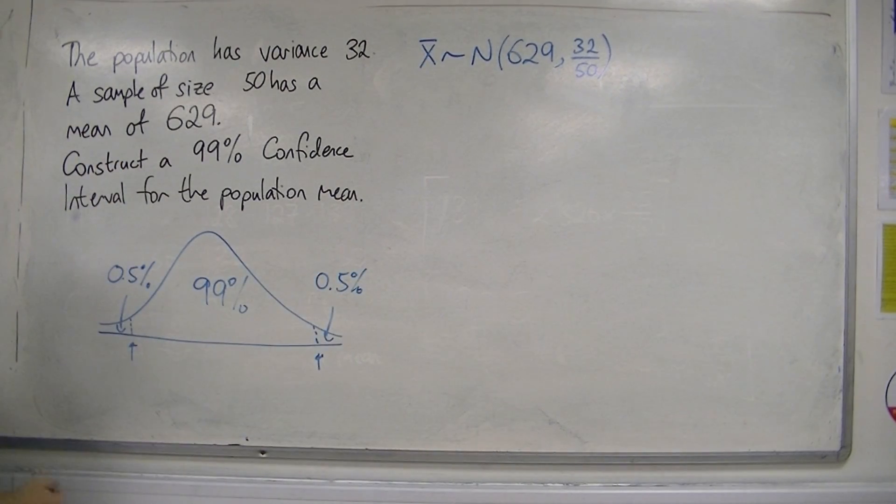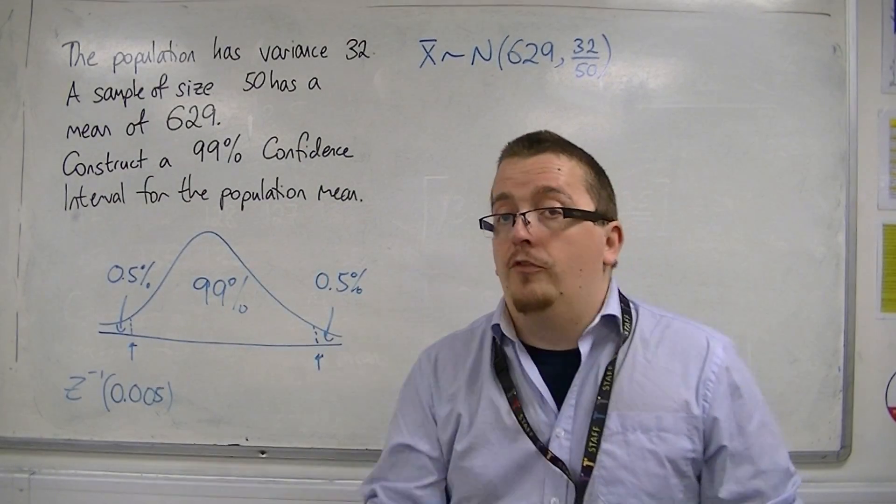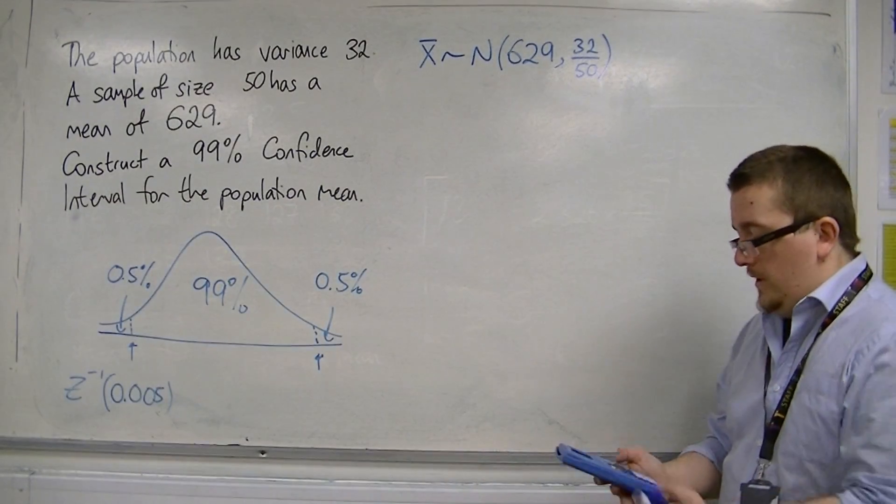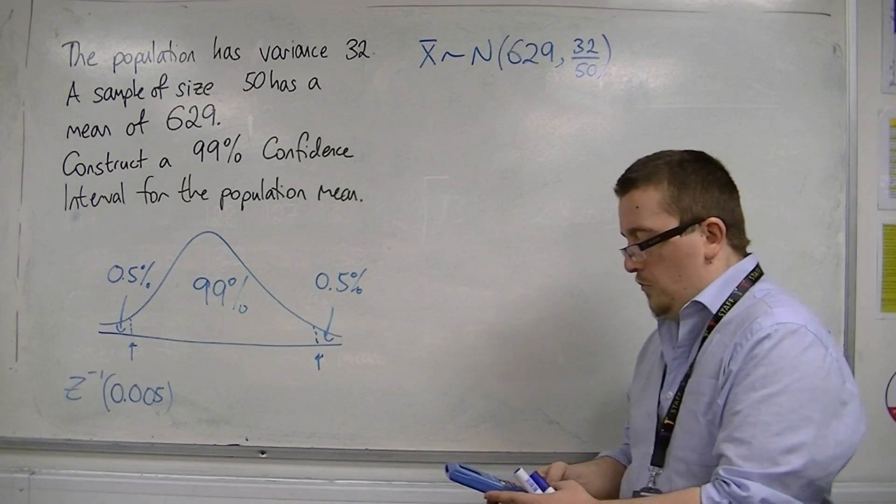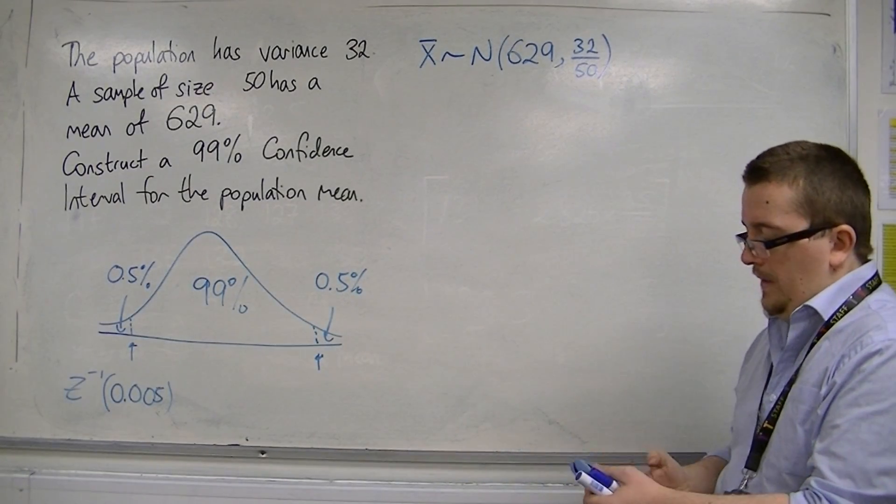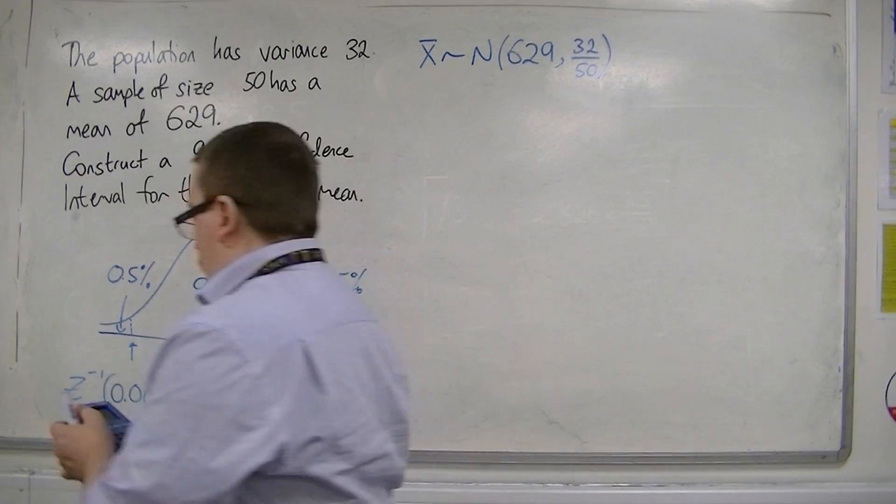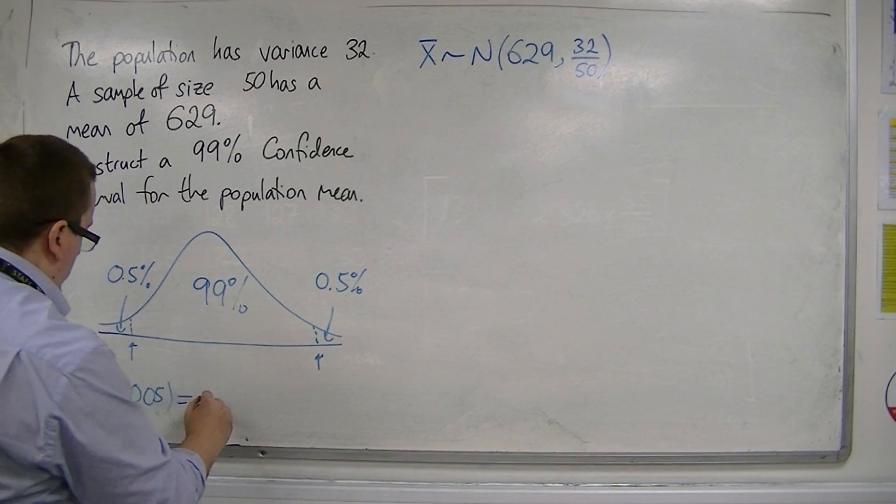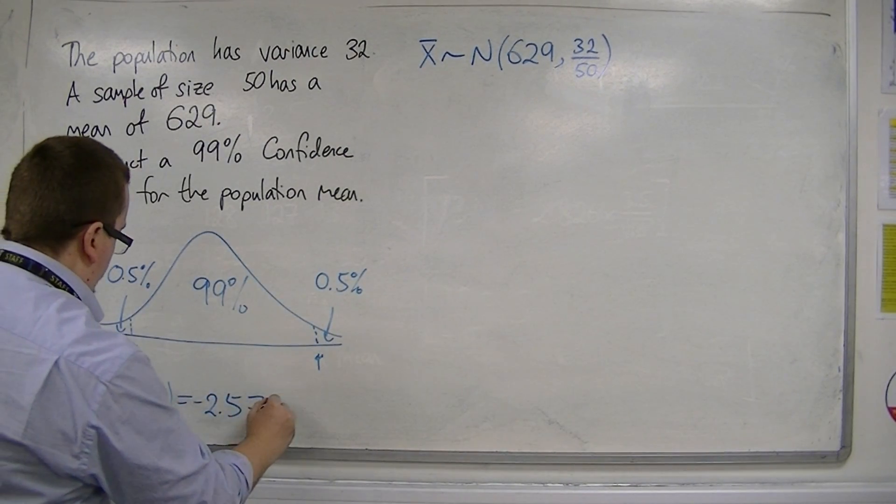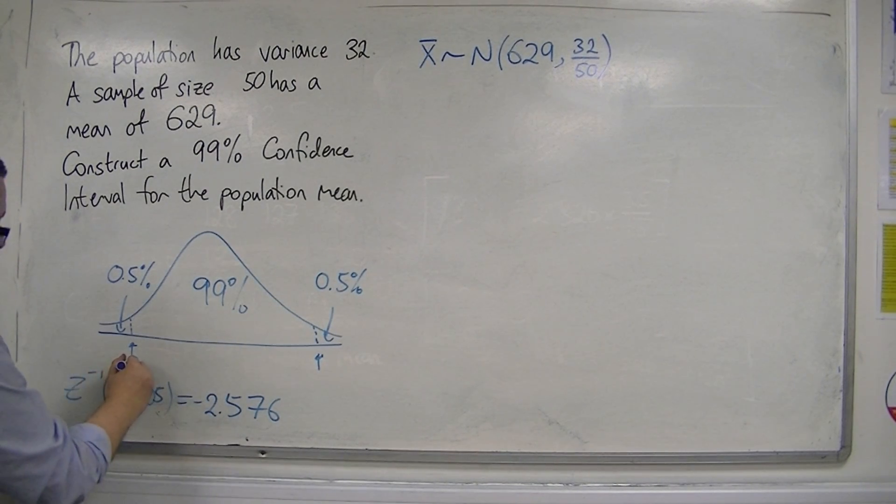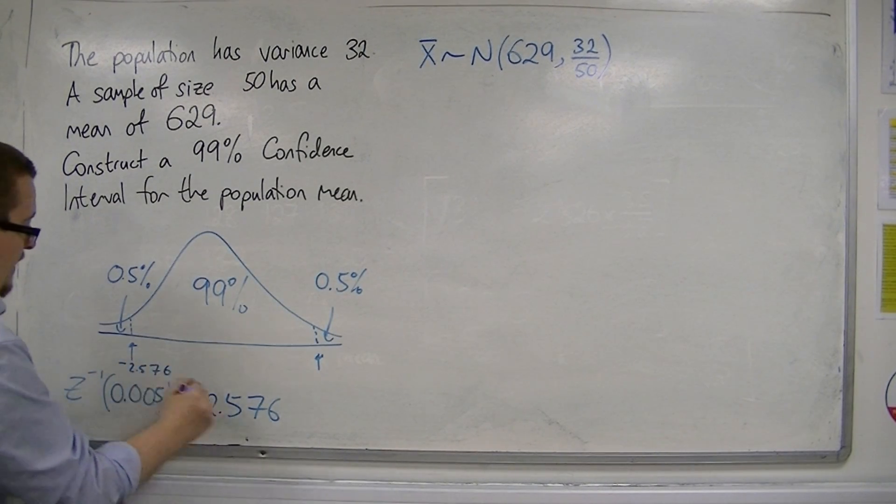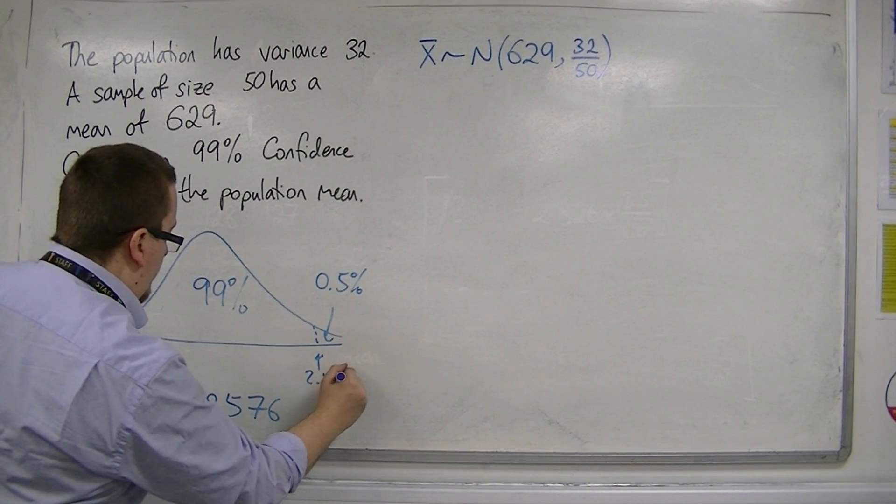And we can calculate the z-value by doing the inverse norm of 0.005. That's 0.5%. You can do that using your formula booklet or your calculator. So, the inverse norm of 0.005 is minus 2.576 to three decimal places. That's minus 2.576 and that's plus 2.576.